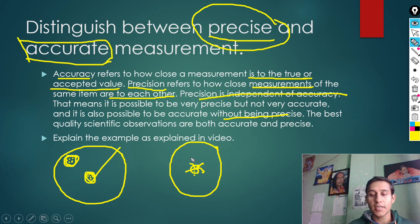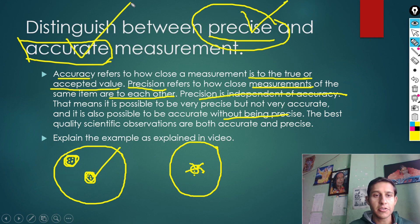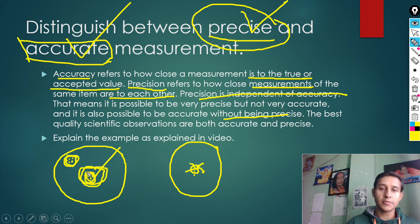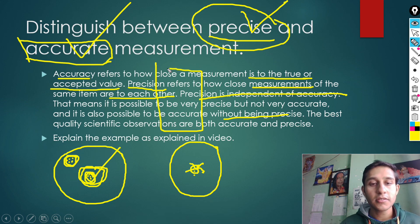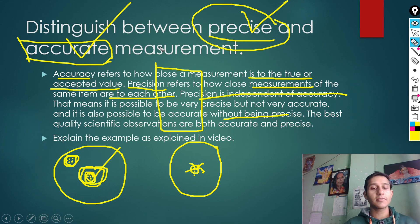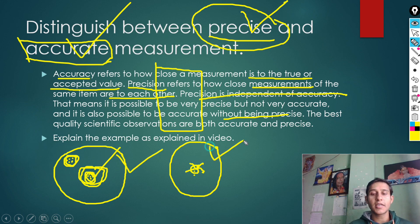In scientific measurement, the ideal is to be both precise and accurate - meaning measurements are consistently close to each other and also close to the true value. This is the best answer. You can understand this through the same fighter plane example: shots that are clustered tightly together near the center are both precise and accurate. This covers the distinction between precise and accurate for Class 11 physical quantities.